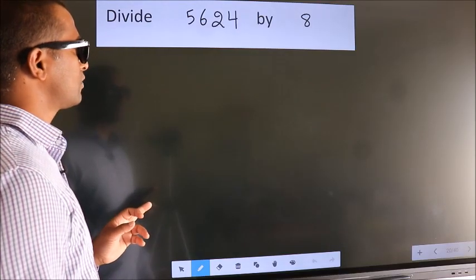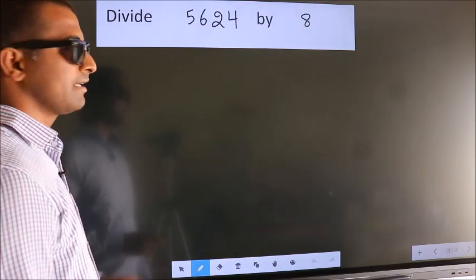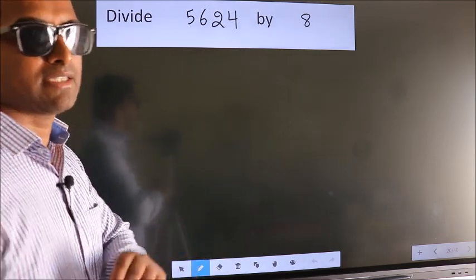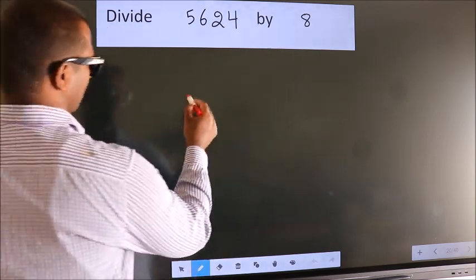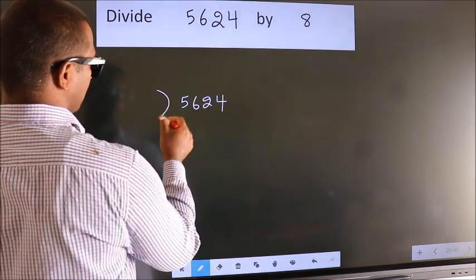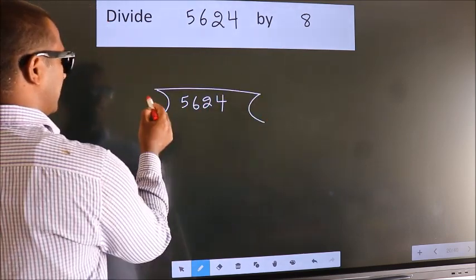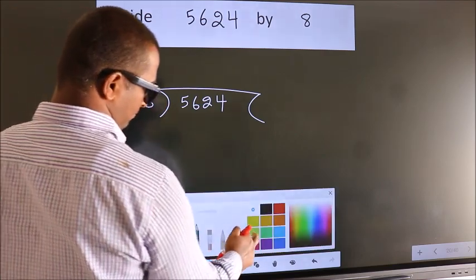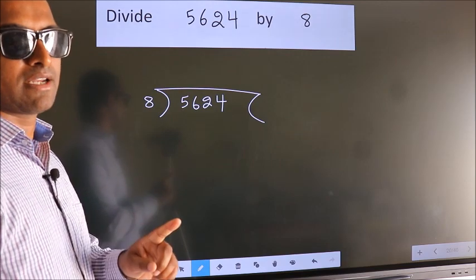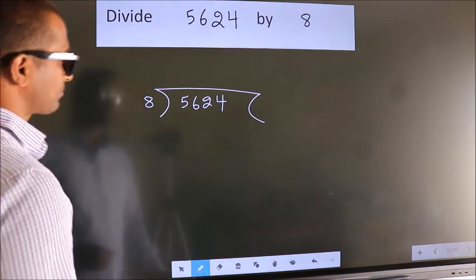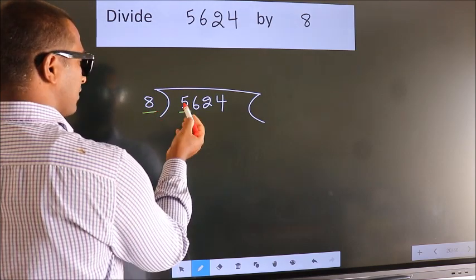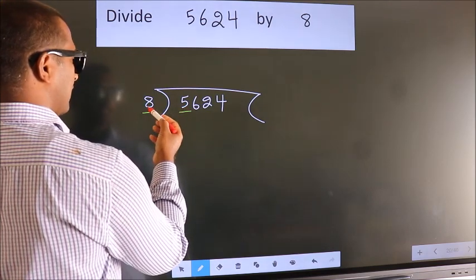Divide 5624 by 8. To do this division, we should frame it in this way. 5624 here, 8 here. This is your step 1. Next, here we have 5, here 8. 5 is smaller than 8.